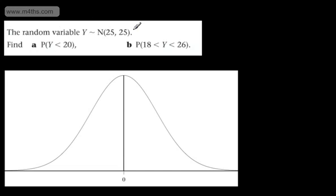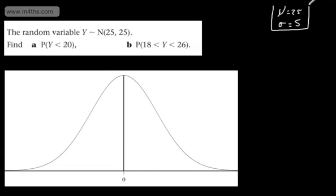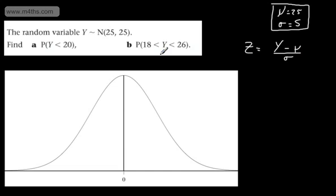Let's first look at the values. We can say that the mean, mu, is 25, and the standard deviation, sigma, is the square root of 25, which is 5. We've seen in previous videos that we can make the substitution z equals y minus mu divided by sigma, or y minus the mean divided by the standard deviation.